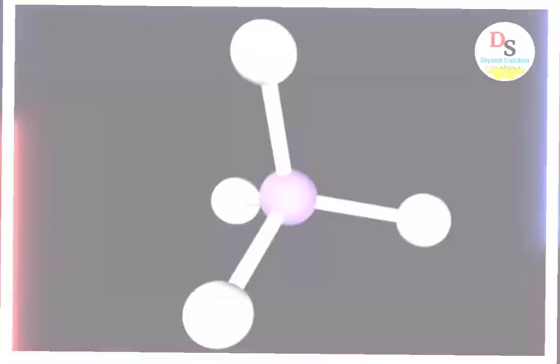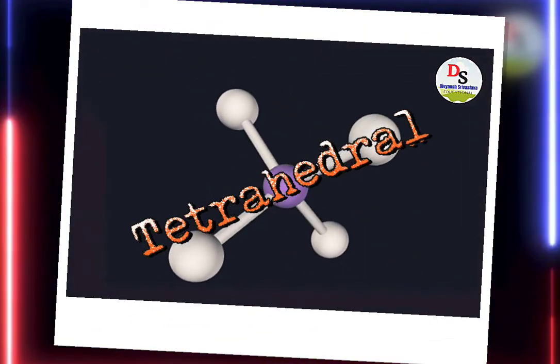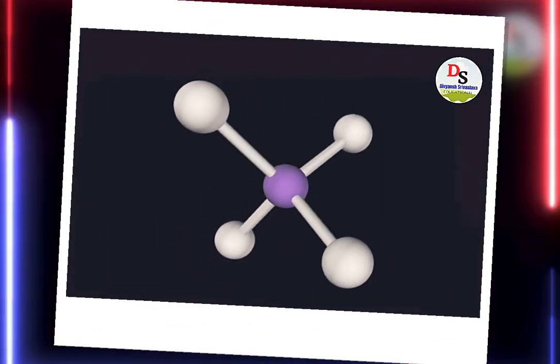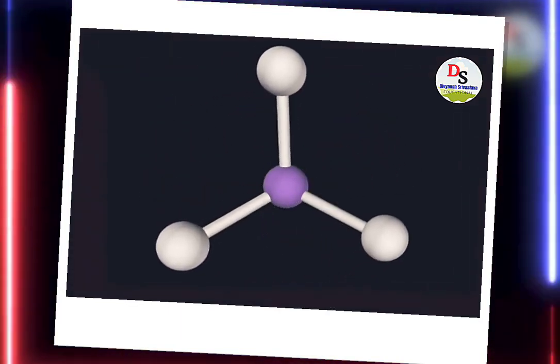It is the tetrahedral structure of a molecule. It has 4 bond pairs and 0 lone pairs.